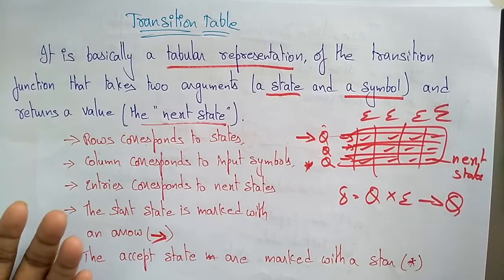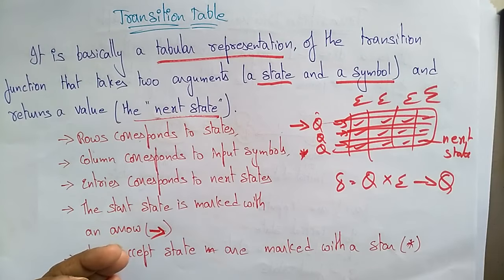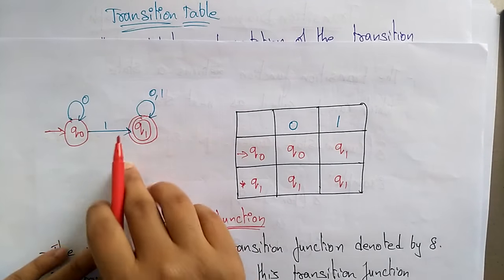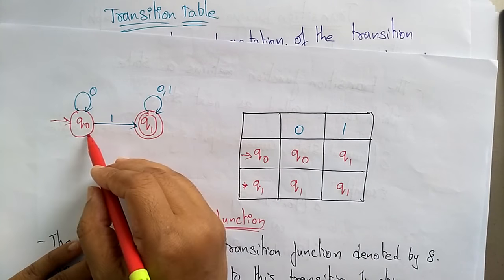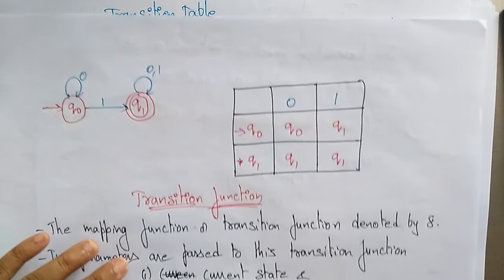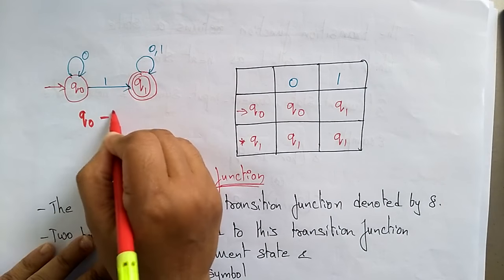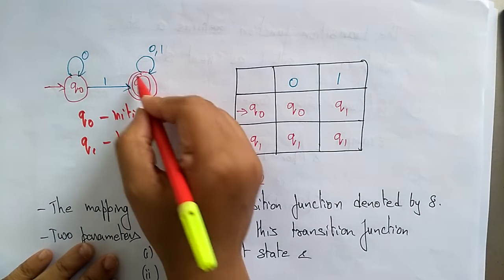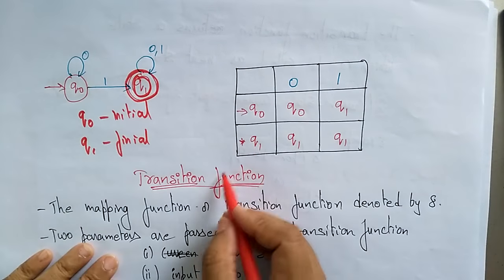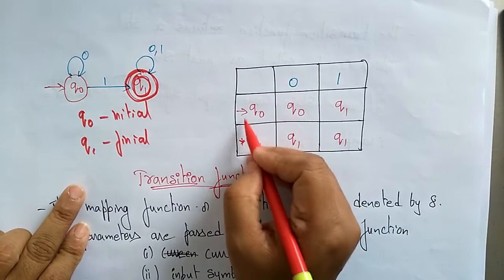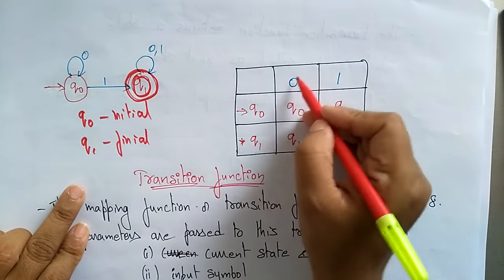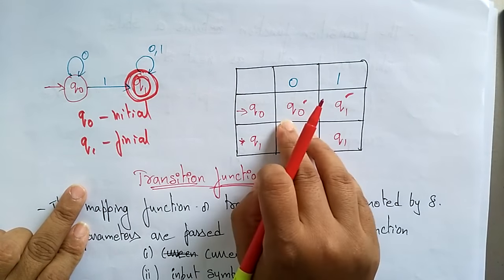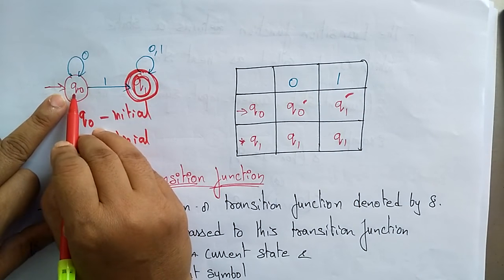Let me show you how to draw the table by looking at this transition diagram. The two states are q naught and q1. Q naught is the initial state and q1 is the final state — always represented with two circles. In the rows write the states q naught and q1, and in the columns write the input symbols 0 and 1.